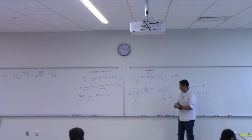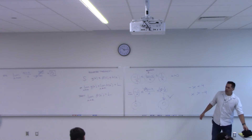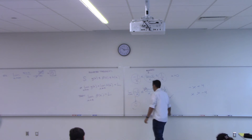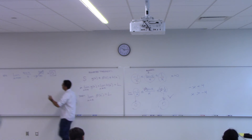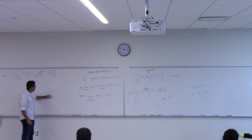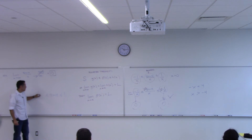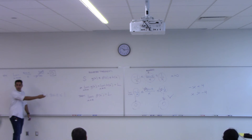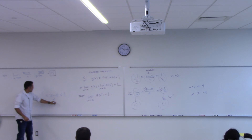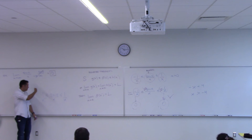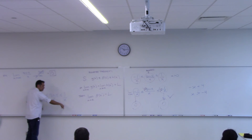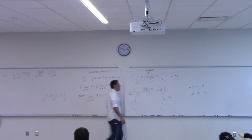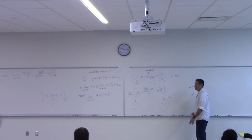The hardest part of using this theorem is coming up with the three functions. Here with sine x over x, I started with the fact that sine is between negative 1 and 1, then divided everything by x to create the three functions g, f, and h. The two outer functions go to zero when you take the limit as x goes to infinity, and thus the middle one must also.